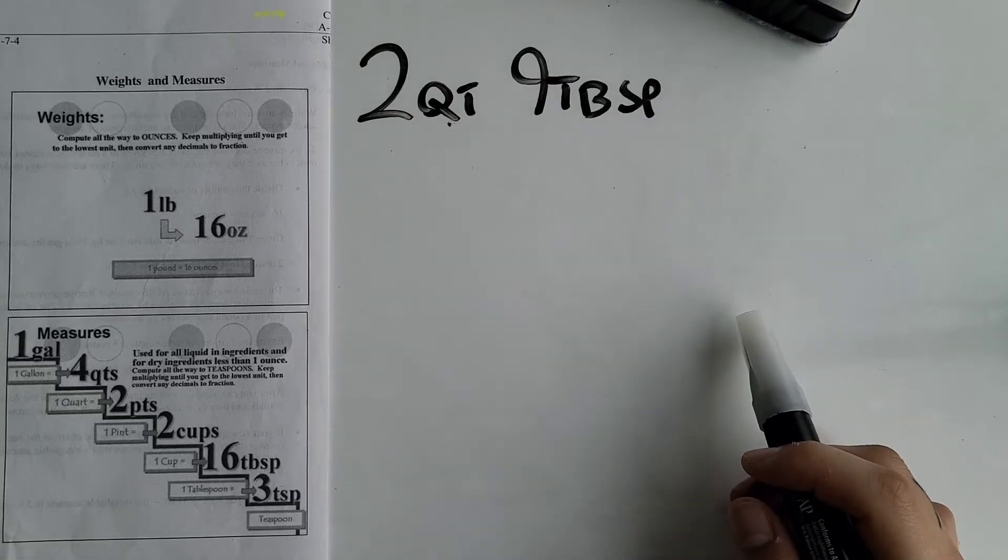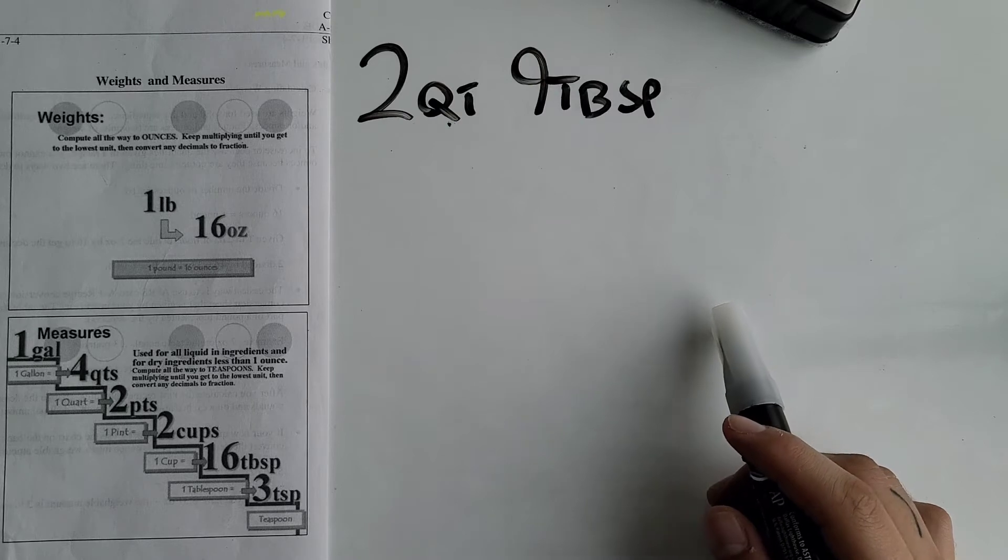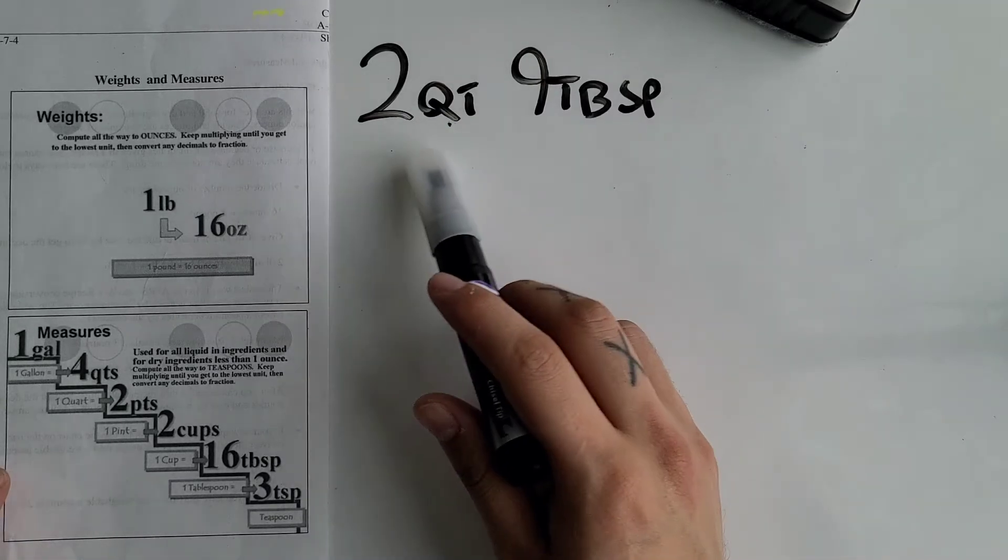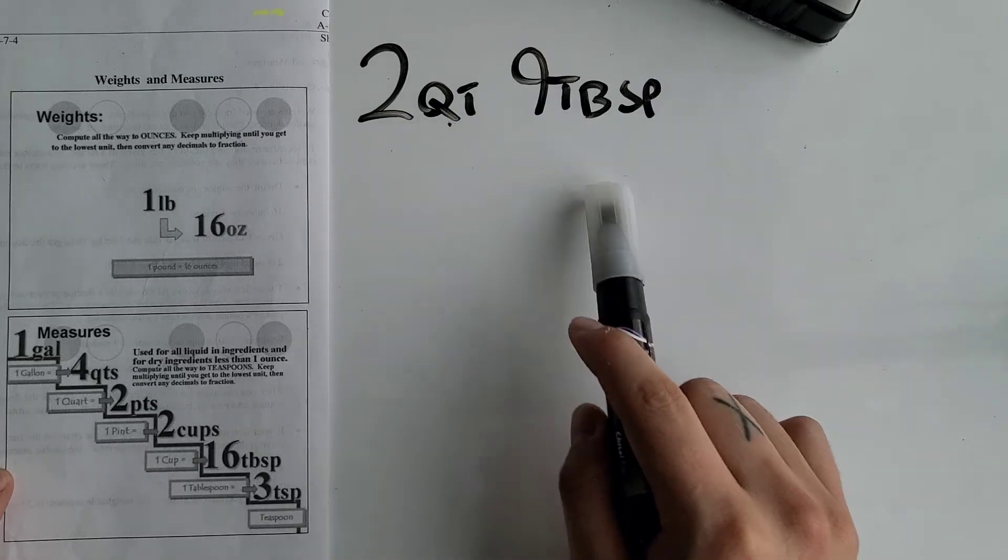Today we're going to continue going over how to convert a mixed unit into a single unit. Right now we have two quarts and nine tablespoons and we're trying to convert these nine tablespoons into quarts.